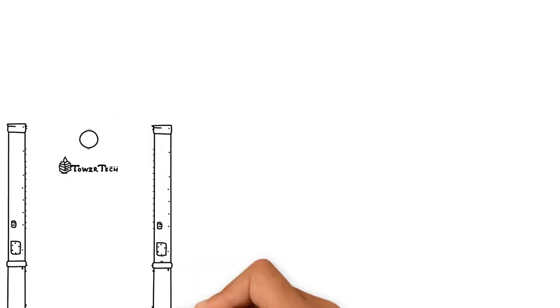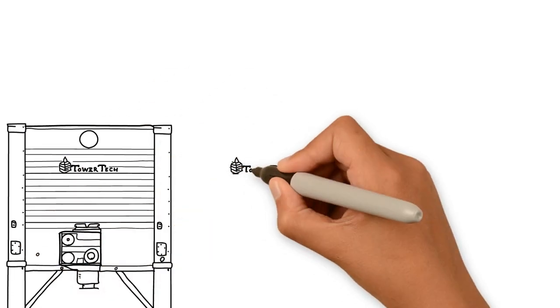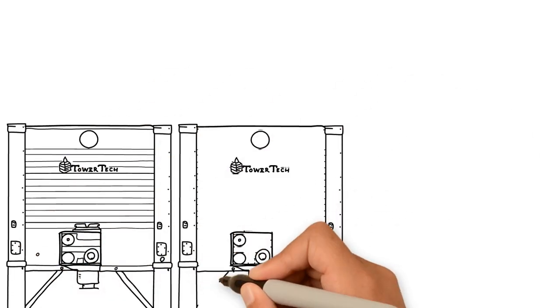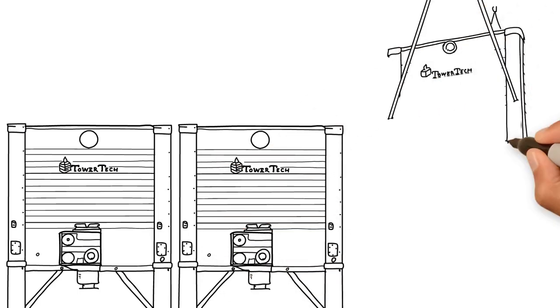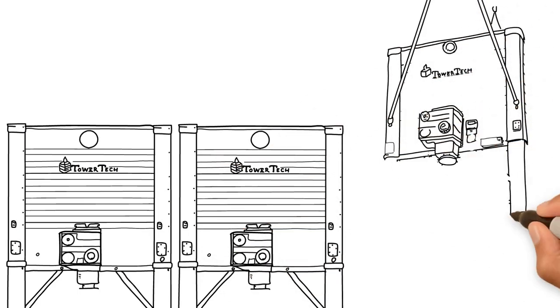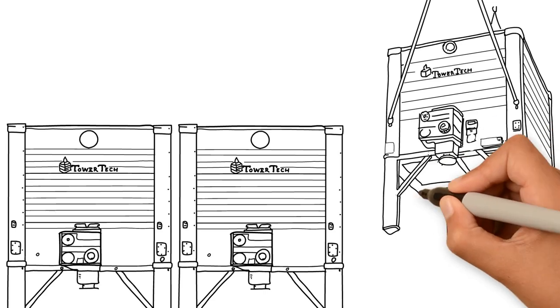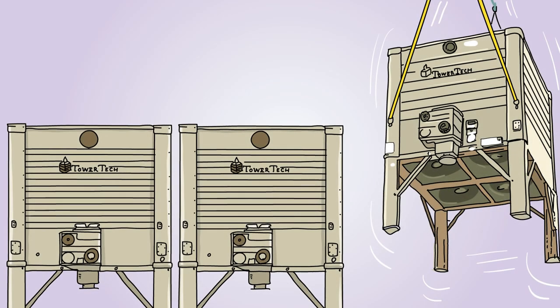TowerTek's modularity allows for the units to be placed right next to each other in virtually any configuration, saving valuable real estate. TowerTek's factory-assembled cooling tower is the fastest installation time in the industry, with less than 30 minutes per tower needed.